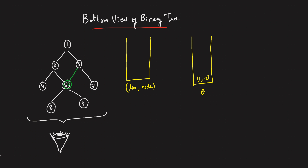We start with node 1 at line 0. So in the map on key 0, we insert node 1. Once done, check node 1's left child — that's 2. Insert it into the queue with line 0 minus 1, which is minus 1. Then check node 1's right child — that's 3. The vertical will be plus 1, so insert that into the queue. Node 1 is now done.